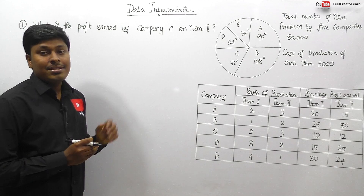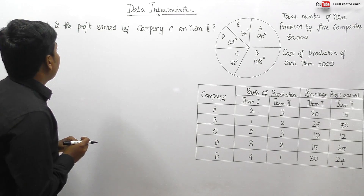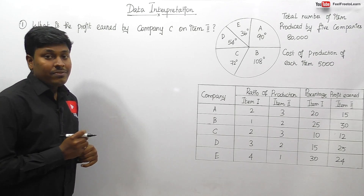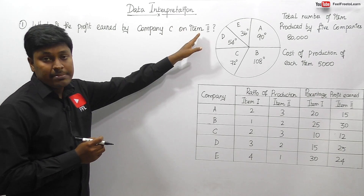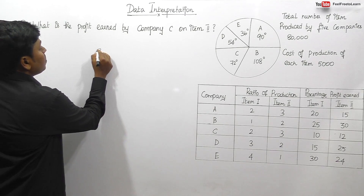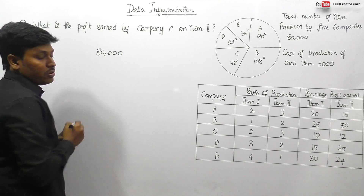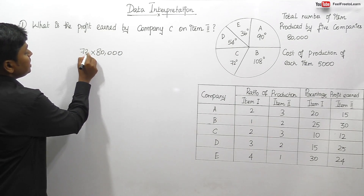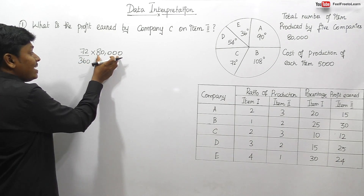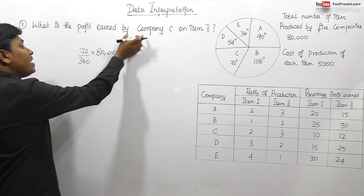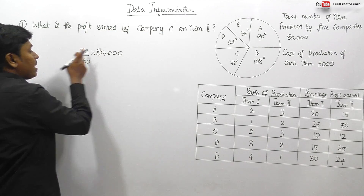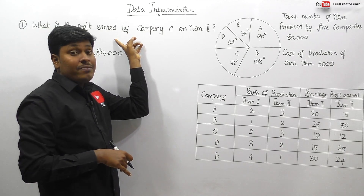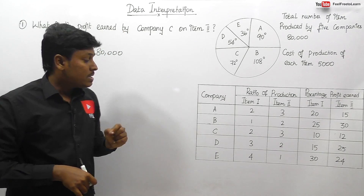Question number one: what is the profit earned by company C on item number two? First, total production is 80,000. Company C's production is 72 degrees, which can be written as 72 divided by 360 out of 80,000. Our target is to find the profit earned by company C on item number two.